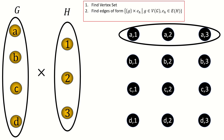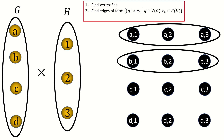Next, for left coordinates B, C, and D, we'll have the same situation. The only edge that we can form using the possible right coordinates of 1, 2, and 3 is 1, 2, 3. So we get the following edges in our product.